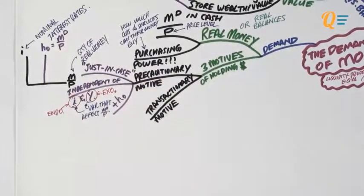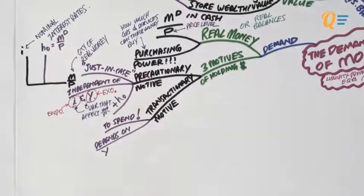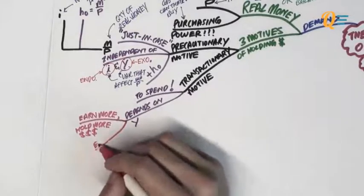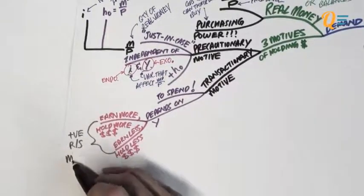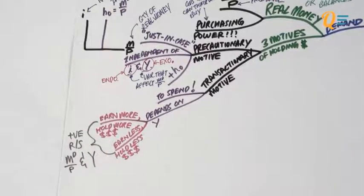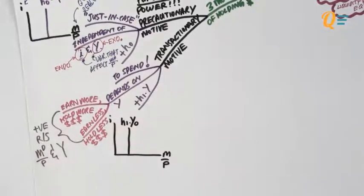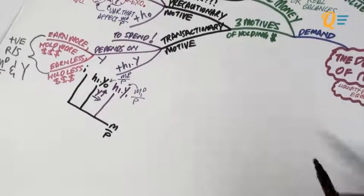The transactionary motive of holding money refers to the amount of money people want to hold to spend. This is dependent on income level. When you earn more, you want to hold more cash; when you earn less, you hold less. There is a positive relationship between real money demand and income level. We denote the transactionary motive as +H1Y. Because Y is an exogenous variable, it appears as a vertical line on the graph — when Y increases, the entire vertical line shifts to the right, and when it decreases, it shifts to the left.